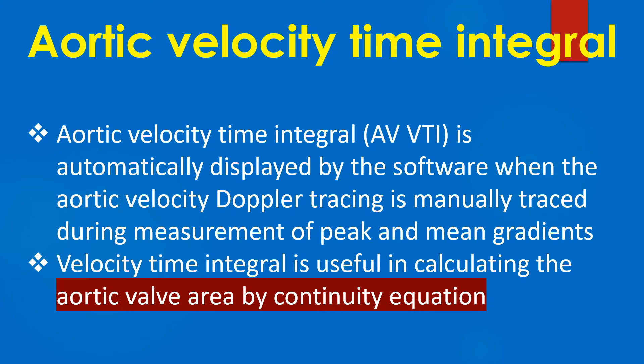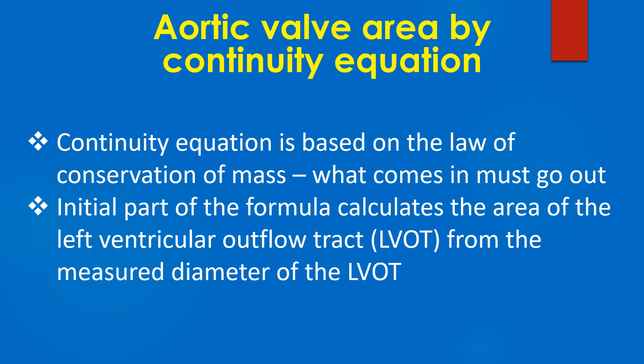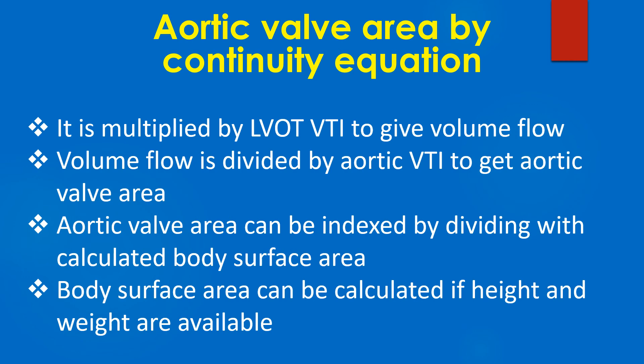Velocity time integral is useful in calculating the aortic valve area by the continuity equation. The continuity equation is based on the law of conservation of mass — what comes in must go out. The initial part of the formula calculates the area of the left ventricular outflow tract from its measured diameter, multiplied by LVOT VTI to give volume flow. Volume flow is then divided by aortic VTI to get aortic valve area.